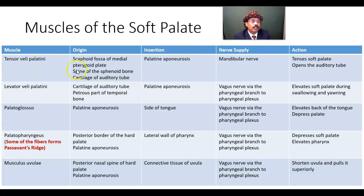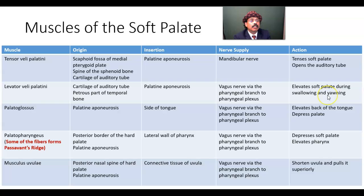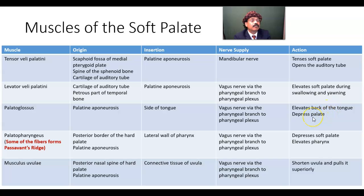The tensor veli palatini is supplied by the mandibular nerve. It tenses the soft palate and opens the auditory tube, especially during swallowing and yawning. The levator veli palatini elevates the soft palate. The palatoglossus muscle elevates the back of the tongue and depresses the soft palate.